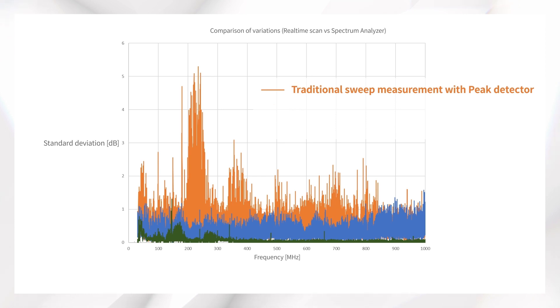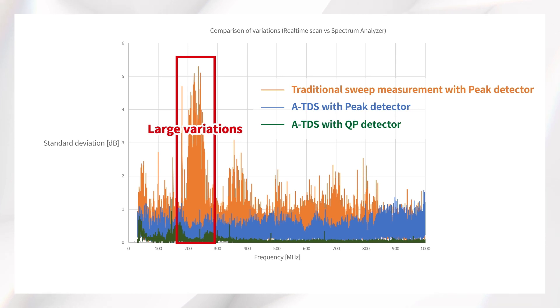The orange trace shows the results of sweep measurement using the peak detector. The blue and green traces show the ATDS measurement results using the peak and QP detectors. The graph shows the sweep measurement results have large variations around 250 MHz compared with the ATDS feature.